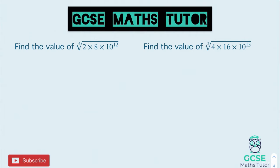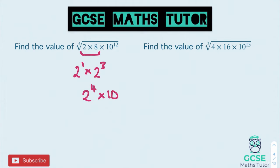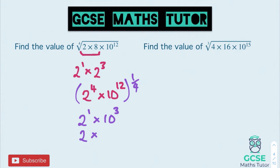There are two questions for you to have a go at — pause the video and we'll go through the answers in a sec. For the first one: joining together the numbers, we have 2 to the power of 1 multiplied by 8, which we can write as 2 cubed. That becomes 2 to the power of 4, multiplied by 10 to the power of 12. Applying the fourth root as a power of a quarter: a quarter of 4 gives 2 to the power of 1, and a quarter of 12 gives 10 to the power of 3. That's 2 multiplied by 1000, giving us the answer 2,000.